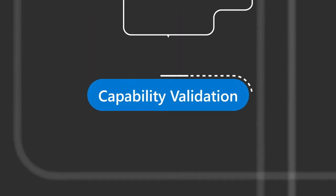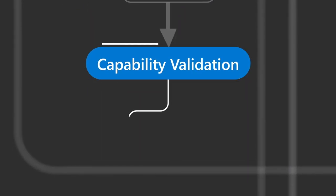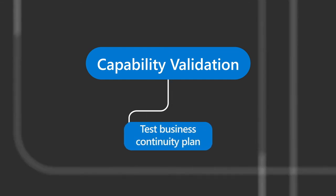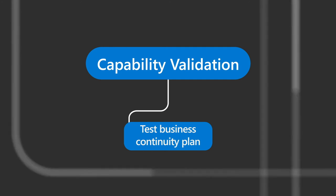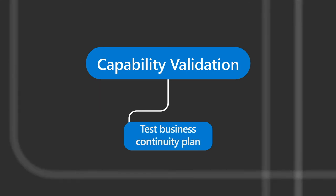Each online services team tests the continuity plan at least annually to determine the plan's effectiveness and the services team's readiness to execute the plan. The frequency and depth of testing is linked to a confidence level, which is different for each of the online services. Confidence levels indicate the confidence and predictability in a service's ability to recover or be resilient.